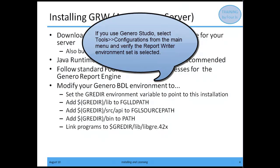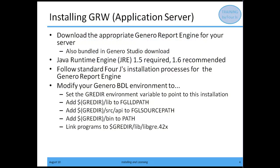The last step is you're going to want to modify your Genero BDL environment so that your GREDIR environment variable is pointing to the installation. You need to add some things to various environment variables: add GREDIR/lib to the FGL LD path, add GREDIR/SRC/API to the FGL source path, add GREDIR/bin to the path variable, and make sure your programs are linked to the libgre.42x library when being compiled.